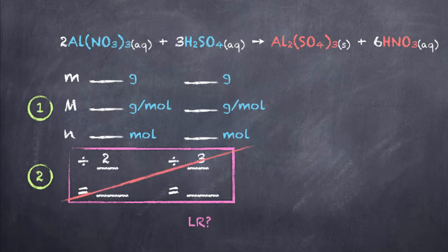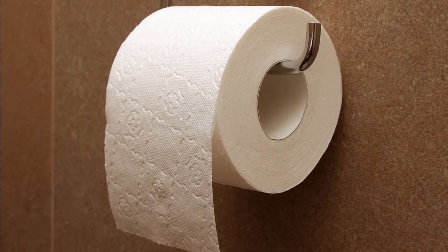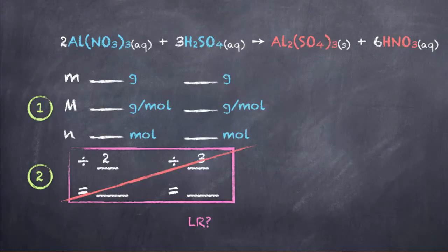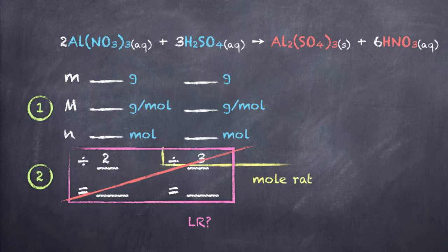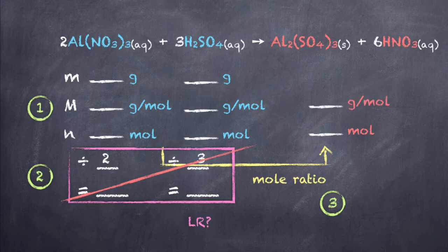Remember, this calculation only establishes our limiting reagent — we never use these values again. I like to think of them as toilet paper: we use it once and never use it again. So we go back and use the number of moles of our limiting reagent to figure out the number of moles of the product being produced, using the mole ratio from the balanced chemical equation, and then use the molar mass to figure out the mass.